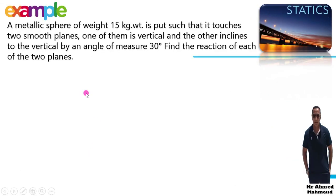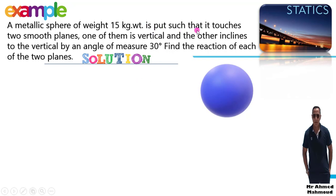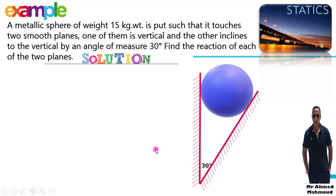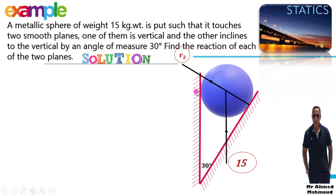New example: A smooth sphere of weight 15 kg-weight is placed touching two smooth planes, one vertical and the other inclined to the vertical by 30°. The weight acts downward. The reaction of the vertical wall is perpendicular to it (horizontal), and the reaction of the inclined plane is perpendicular to that plane.